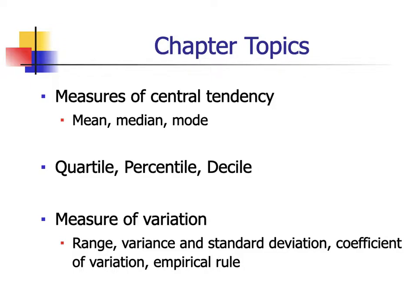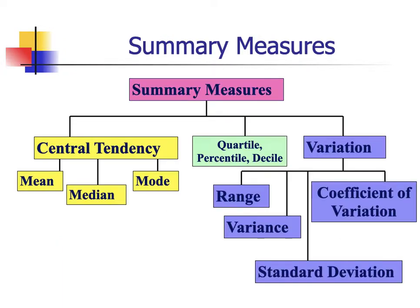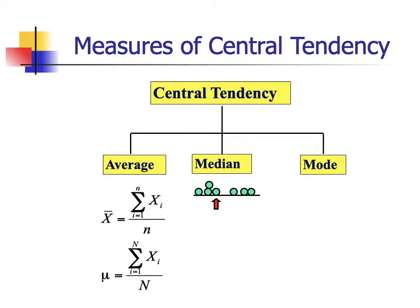In this recording, I will focus on the different measures of central tendency — mean, median, and mode. Here is a chart of the different topics we will cover for this module. Let us first focus our attention on the three different measures of central tendency. We have the mean, or what we refer to as the average, denoted by x-bar, and also the Greek letter mu.